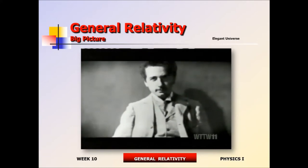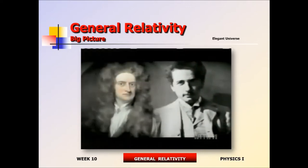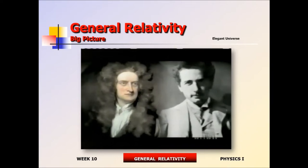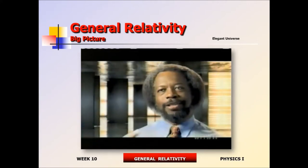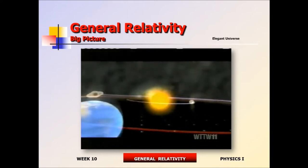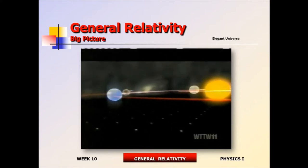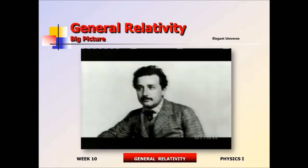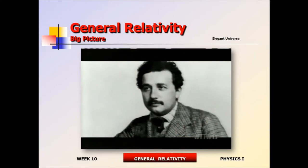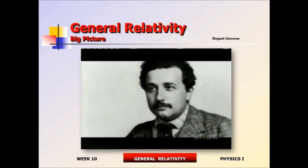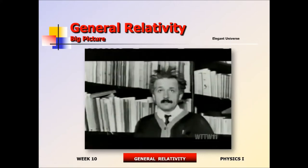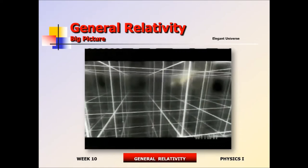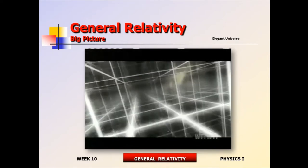To the young Einstein, anything outrunning light was impossible, meaning the 250-year-old Newtonian picture of gravity was wrong. In his late 20s, after nearly 10 years of work, Einstein found the answer in a new kind of unification. He came to think of the three dimensions of space and the single dimension of time as bound together in a single fabric of space-time.